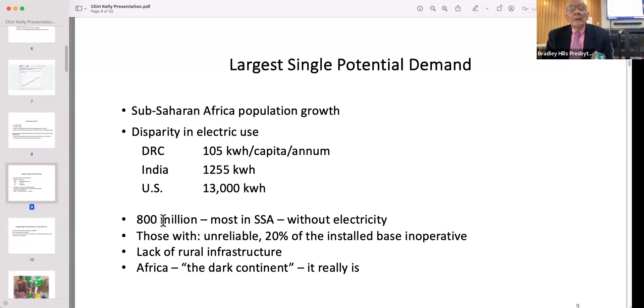In the Democratic Republic of the Congo, the per capita energy use per year is 105 kilowatt hours, which is about what you would use to run your refrigerator. About 800 million people in sub-Saharan Africa are without electricity, and those that have it have it sporadically. We've flown over Africa many times at night, and it really is a dark continent.